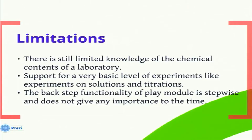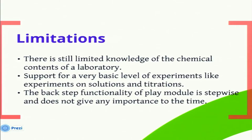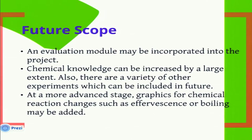As for limitations, the major limitation is the lack of chemical knowledge. We have a chemical class which encapsulates all chemical properties, but it is a very basic model with only color, pH, molarity, and molecular weight. We do not have accommodation for complex experiments or equations. We also have only a basic level of experiments — solutions and titrations. As for future scope, an evaluation module can be implemented since we already have the play module. Chemical knowledge can be increased since we have a base class. We can also improve graphics further by showing features like effervescence or heating effects.